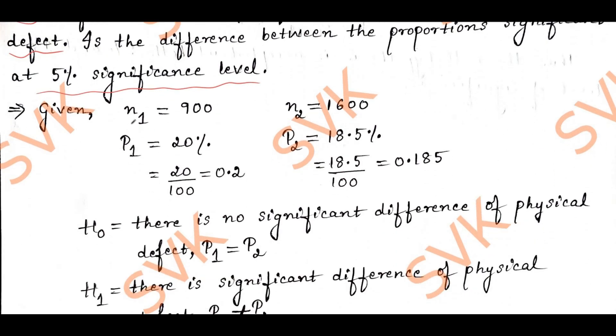Identify what is given. The sample sizes are 900 and 1600, noted as N1 and N2. The sample proportion P1 is 20%, which equals 20/100 = 0.2. P2 is 18.5%, so 18.5/100 = 0.185.